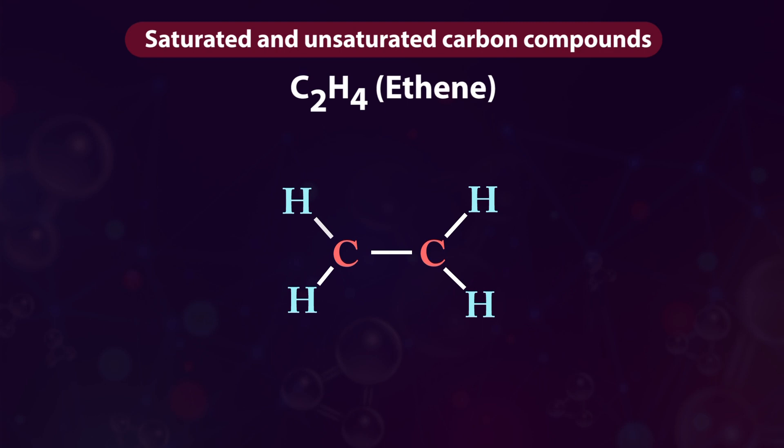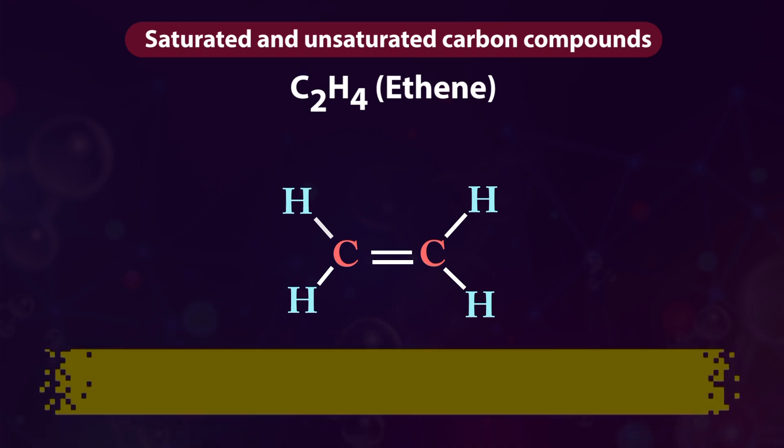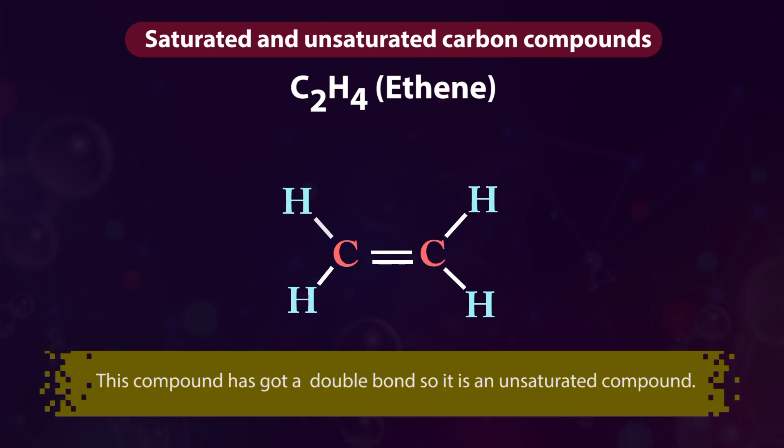Now draw another line between the two carbon atoms — the carbon valency is now satisfied. This compound has a double bond, so it is an unsaturated compound.